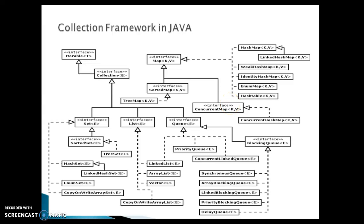HashMap is one of the most used collections. It may be surprising to know that maps themselves are not collections because they don't implement the Collection interface. If you look at this picture, the Collection interface is extended by Set, List, and Queue, which have descendant implementations. But in this hierarchy, Map doesn't belong — Map is totally segregated from this inheritance hierarchy. However, a collection view of a map can be obtained using the entrySet method.